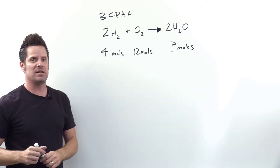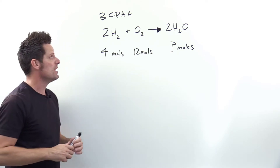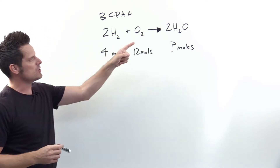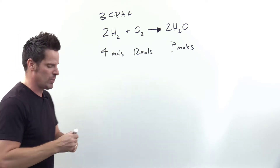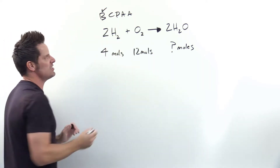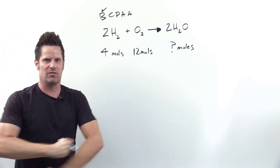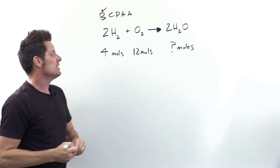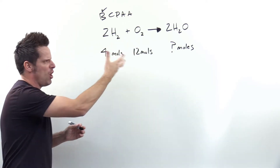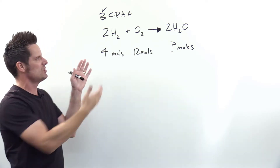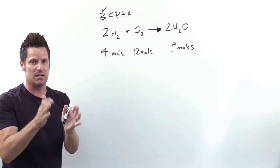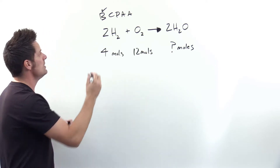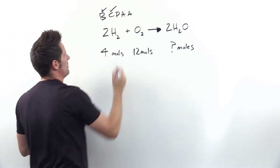Letter B in BICPA stands for balance the chemical equation, using principles discussed in an earlier video linked in the description below. Conveniently this one is already balanced, so we are done with letter B. Letter C stands for convert to moles — we always want to make sure that we do that. If you're given volumes, grams, or other amounts, you have to convert everything to moles. Conveniently, this question gives it to us in moles, so we're done with part C.